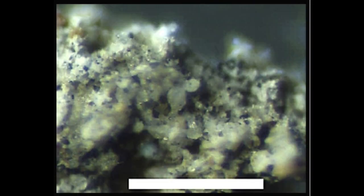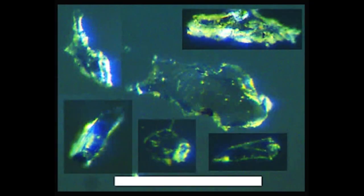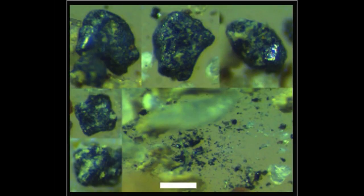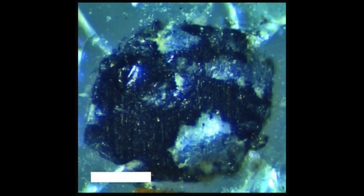The Muang Nong tektite from Vientiane, Lao People's Democratic Republic, was covered in silt-sized quartz grains that also contained glass shards, mini tektites, carbonized wood, and an iron sphere with silt-sized quartz grains.